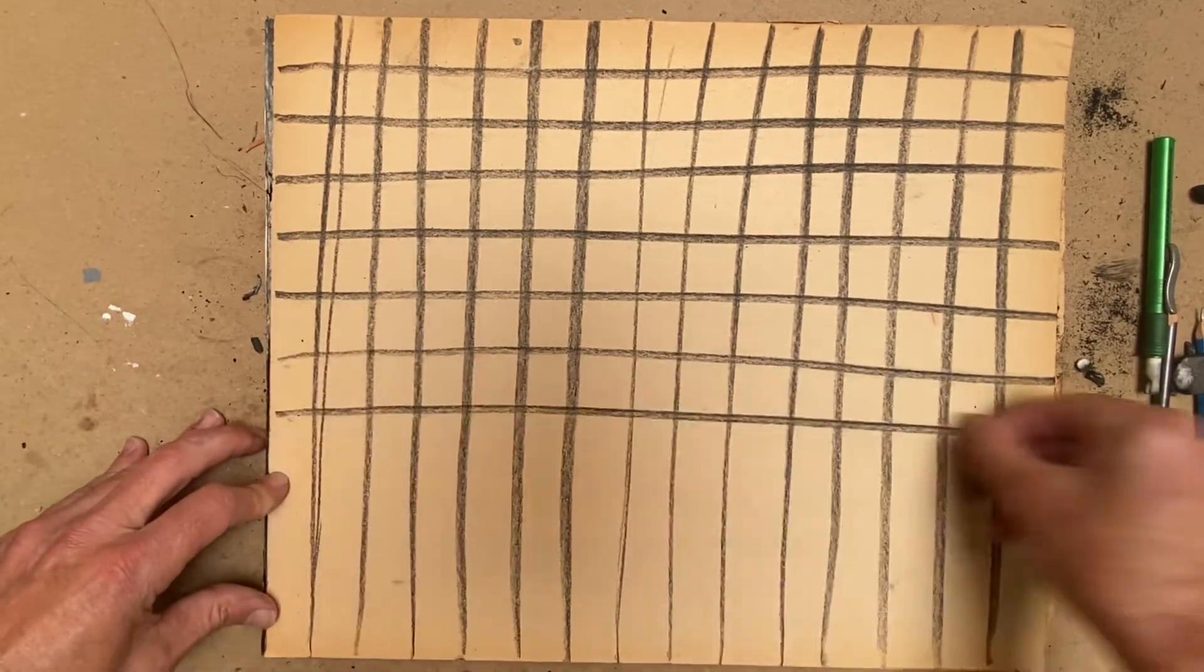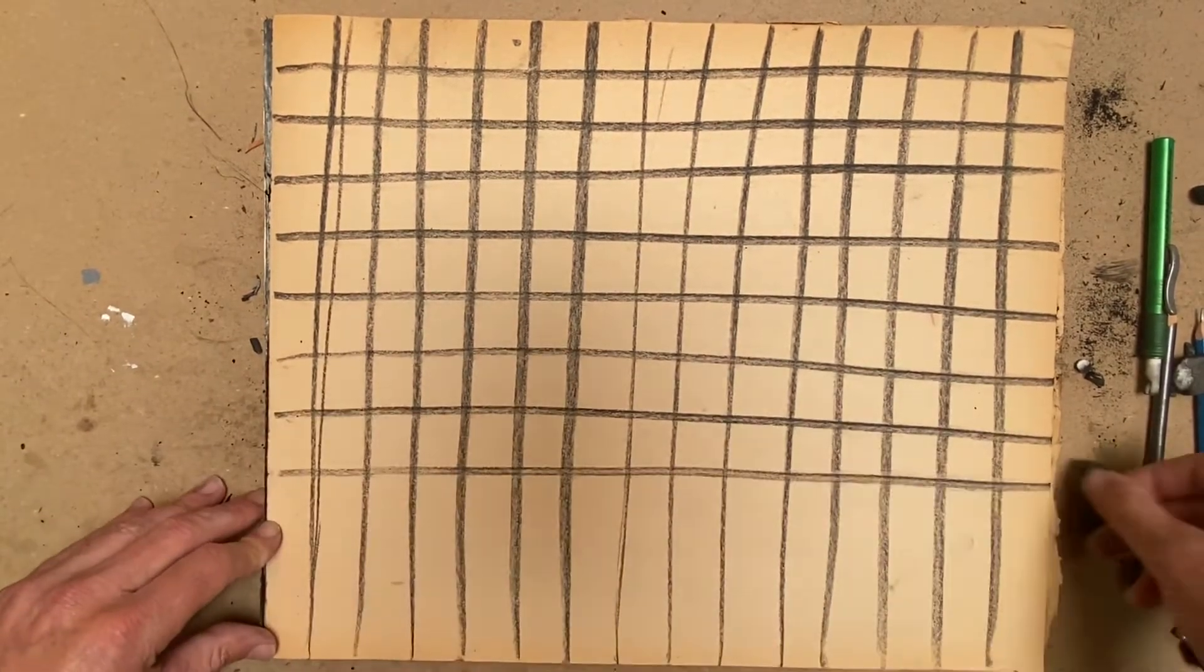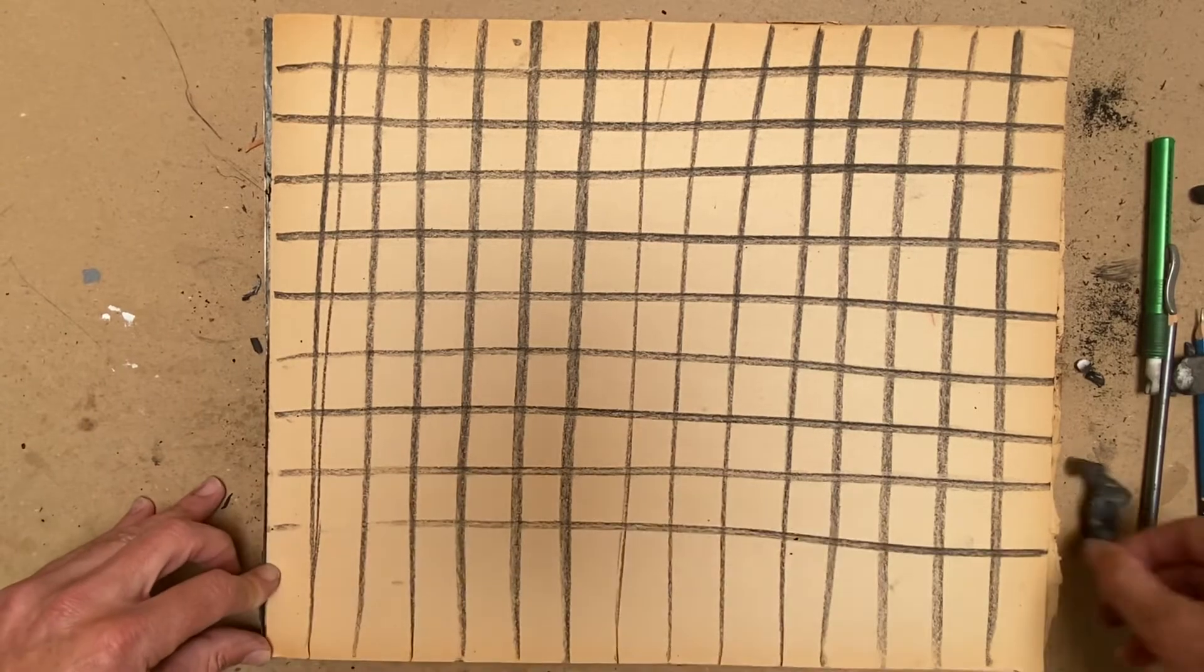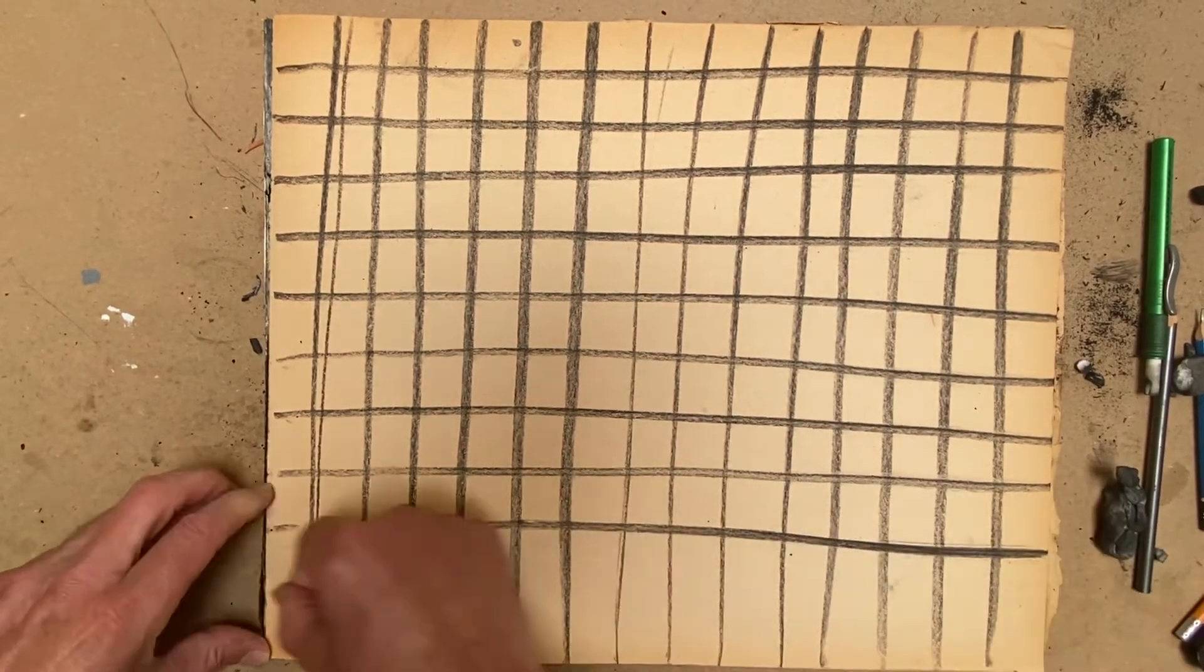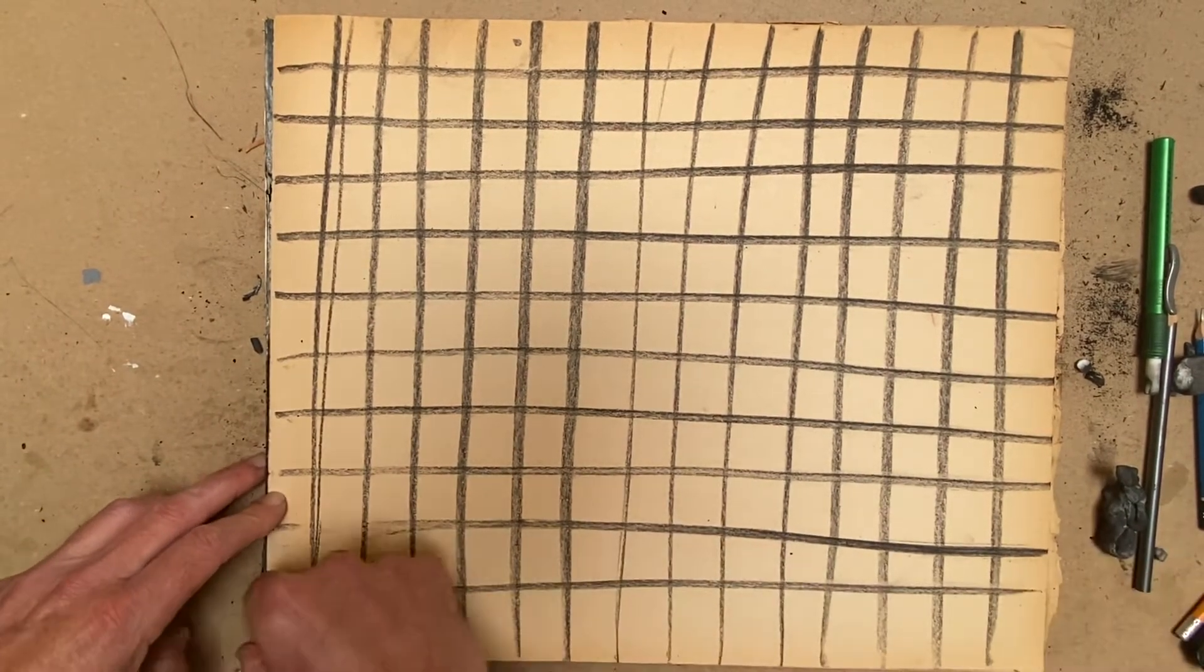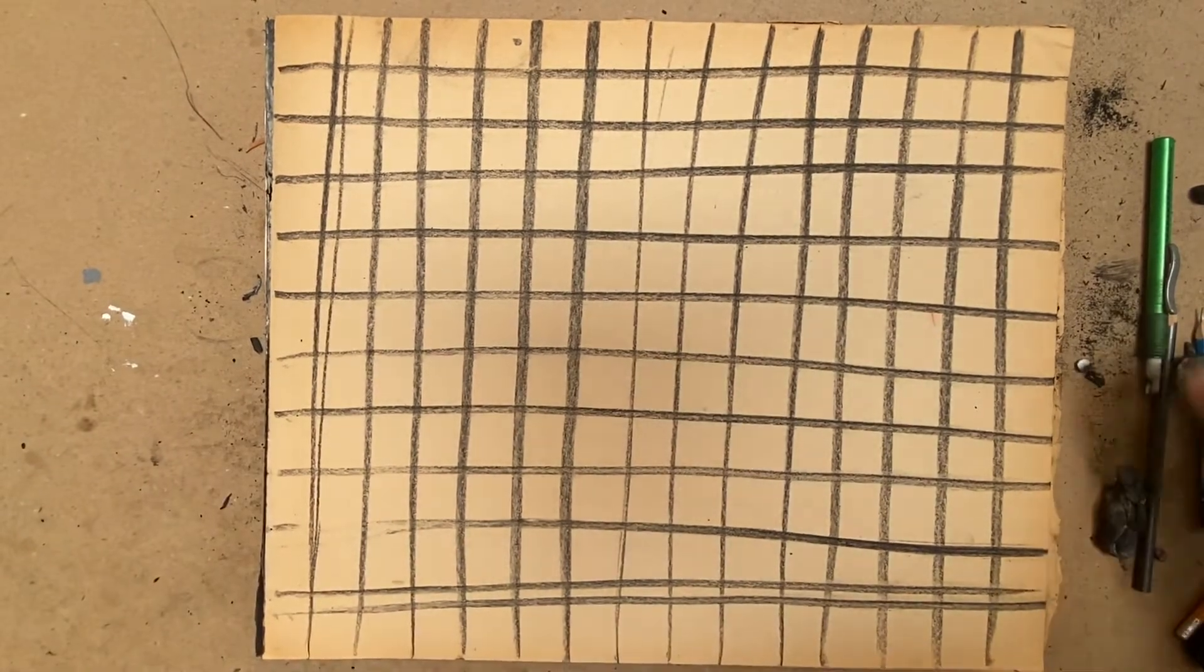So again, the lines don't have to be perfect, but you're going to end up with a grid and the shapes, the squares in the grid should be approximately like one to two inches, something like that.